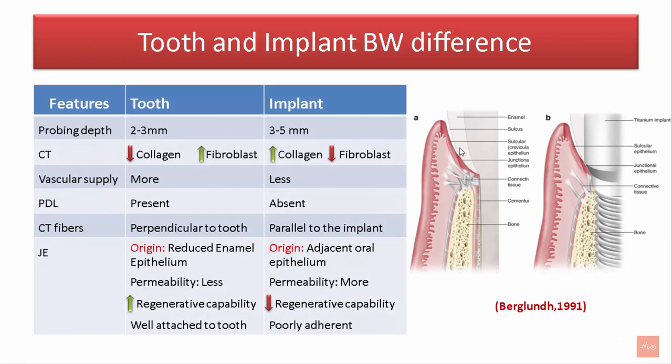The probing depth around a tooth is around 2–3 mm; however, around an implant it is around 3–5 mm. The connective tissue component of a tooth has lower collagen levels but higher fibroblast content, whereas around an implant there are more collagen fibers and fewer fibroblasts. The vascular supply around a tooth is greater as it has a PDL, and less around an implant as it lacks PDL.